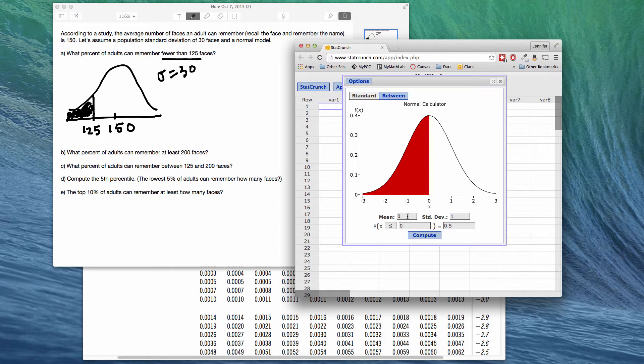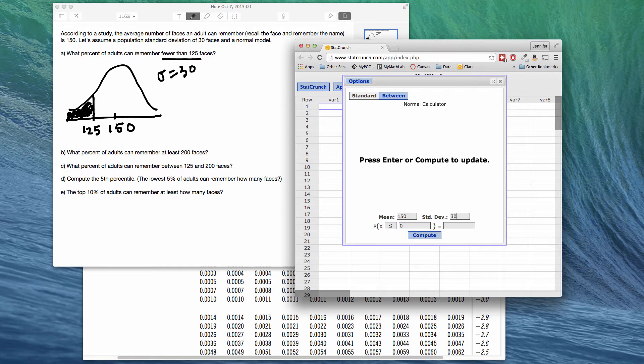So for this question, we were told that the mean number of faces that one could remember is 150, the standard deviation is 30, and what we want to find the probability is less than, notice when I click that, there's only two options, less than or equal to, and greater than or equal to. And this is okay because it doesn't matter if you want to find less than 125 or less than or equal to 125, it's going to be the same answer.